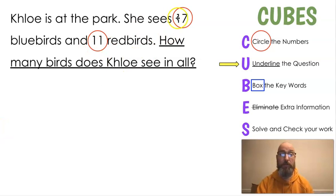So we know that the two numbers, 17 and 11, how many birds does Chloe see in all? Next, we're going to box the keywords. And this one, because it's our first time with addition, let me tell you. Does anybody think they know what it is yet? It's in all. And those keywords mean in all, that means you're adding to find out how much you have in all.